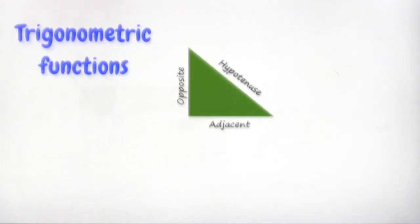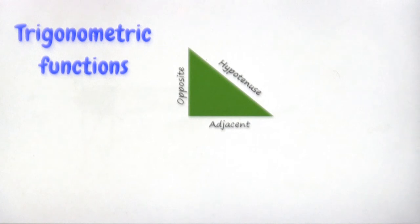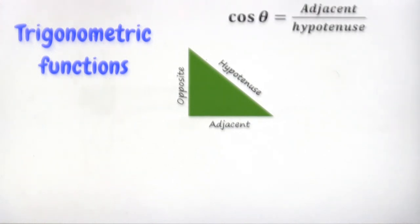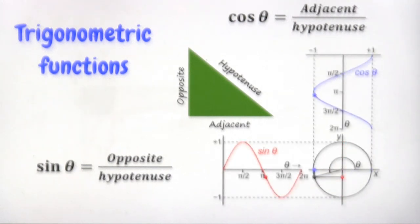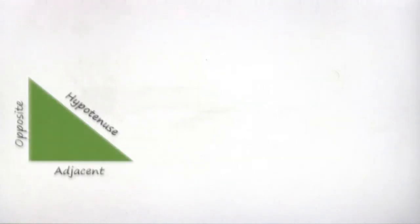Trigonometric functions basically represent the relation between the opposite, adjacent, and hypotenuse of a triangle. The basic functions are cos θ, which equals adjacent over hypotenuse, and sin θ, which equals opposite over hypotenuse. The graphs for these two functions can be represented as shown.